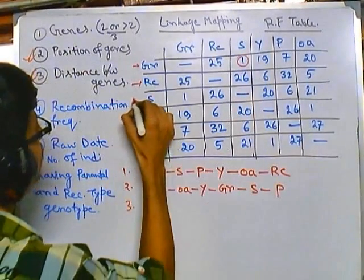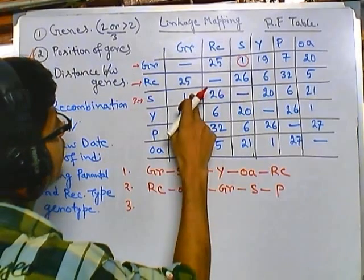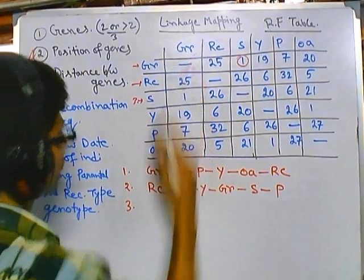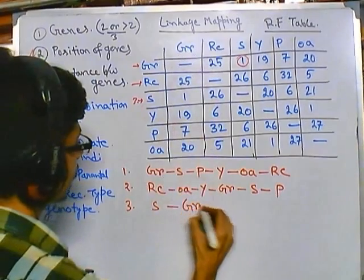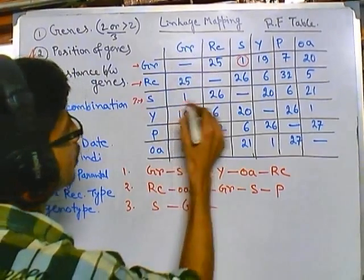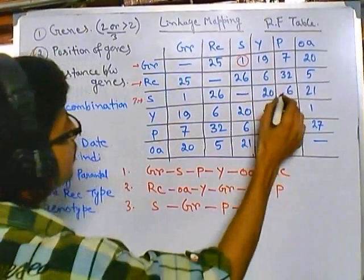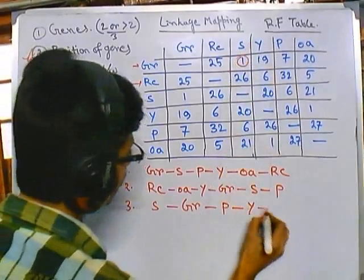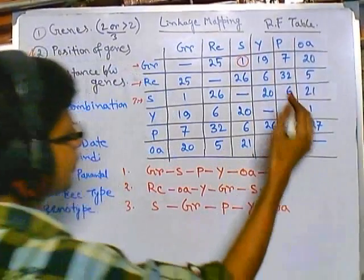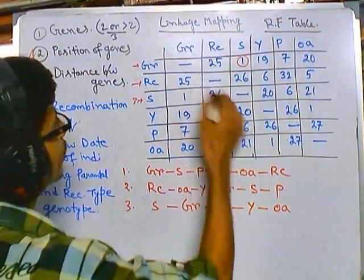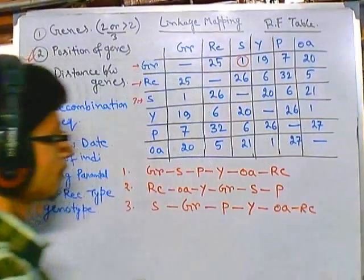For the third row, the least value is one, so it starts with S; the least value one is with GR. Then after one we have six, which is P. Then we have 20, which is Y. Then 21, which is OA. Then 26, which is RC. So the arrangement for the S row is: S, GR, P, Y, OA, RC.